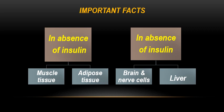Insulin affects different body cells differently. Muscle and adipose tissue require insulin to uptake glucose; without it, they use alternative energy sources like triglycerides and fats. Without insulin, the liver cannot convert glucose to glycogen and instead converts glycogen into free glucose. Brain and nerve cells do not rely totally on insulin, but if blood glucose falls below 50 mg per deciliter in diabetic patients, the brain will not function properly.